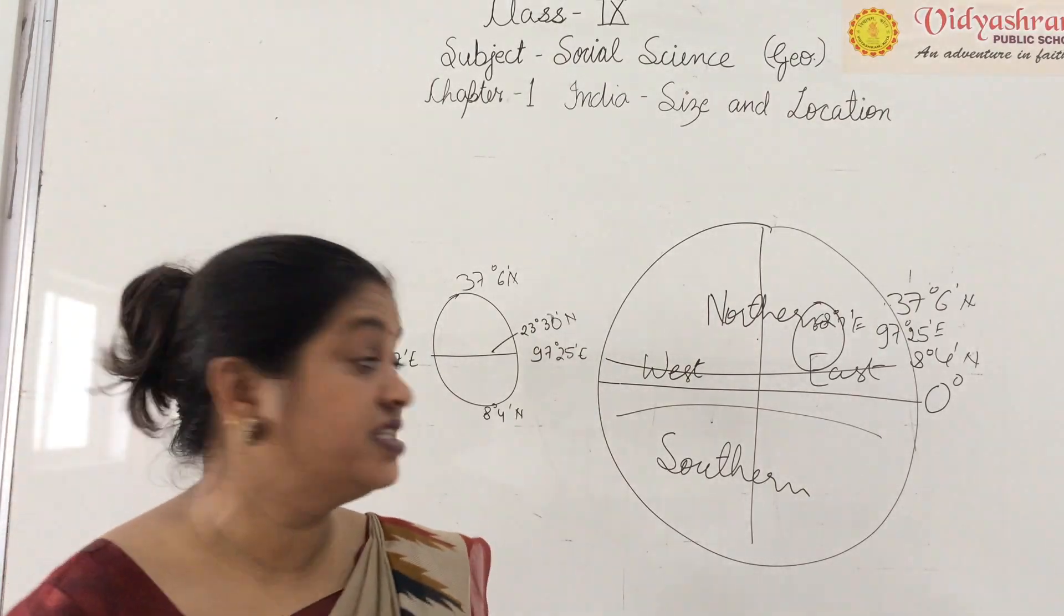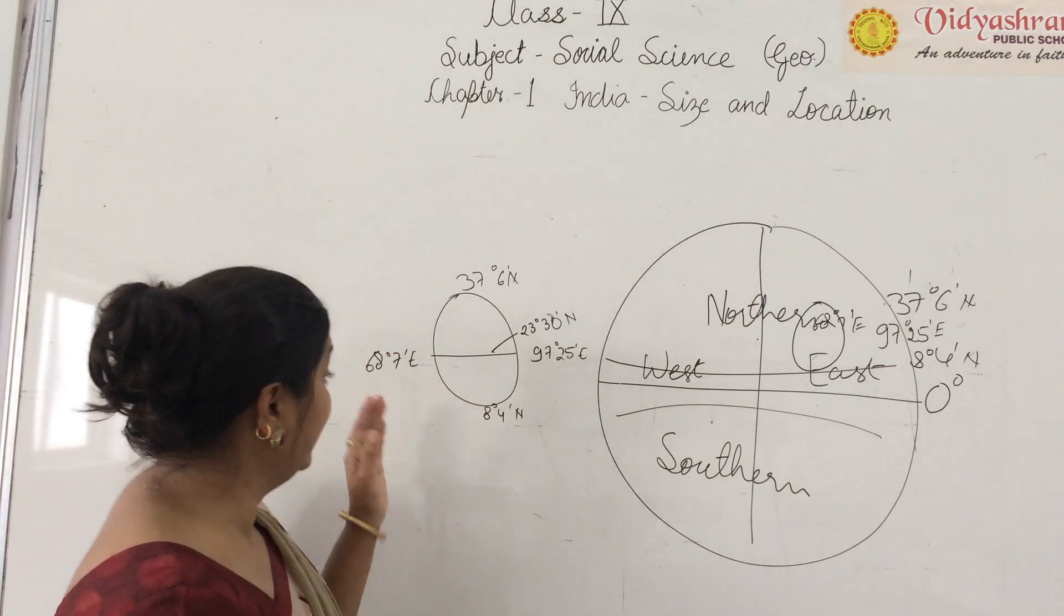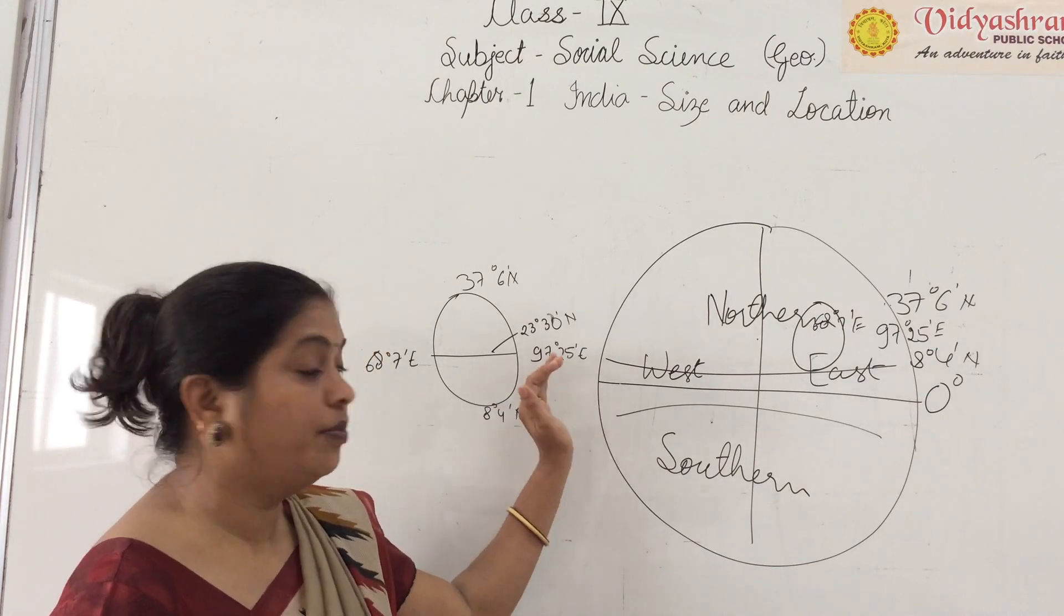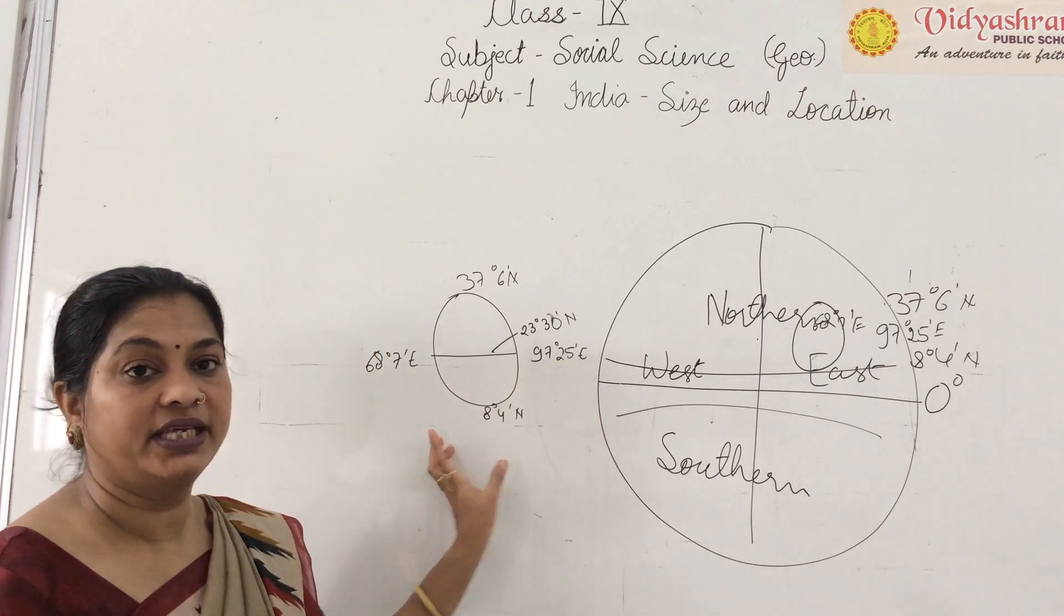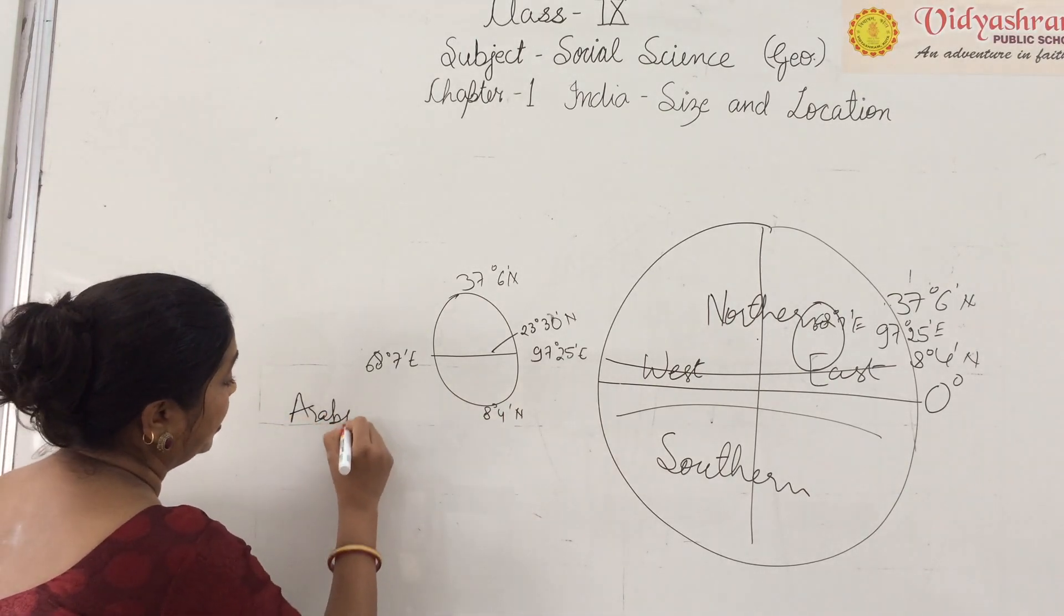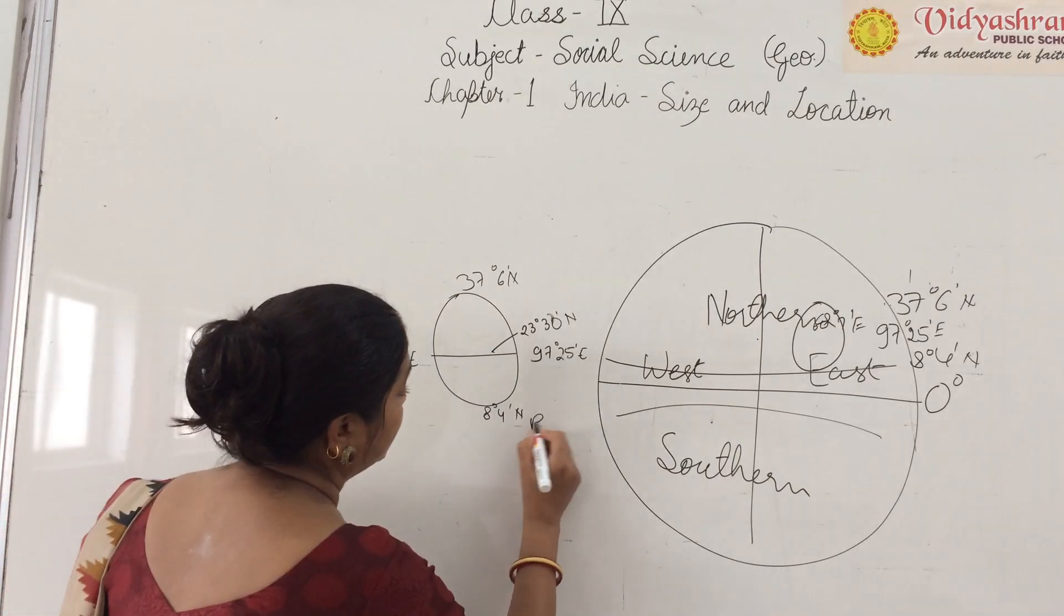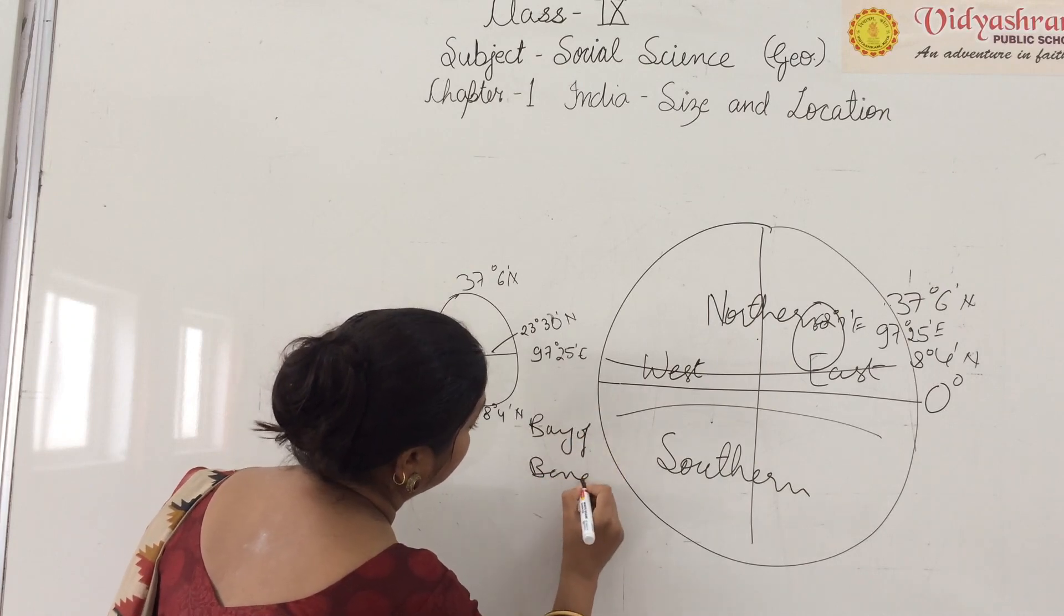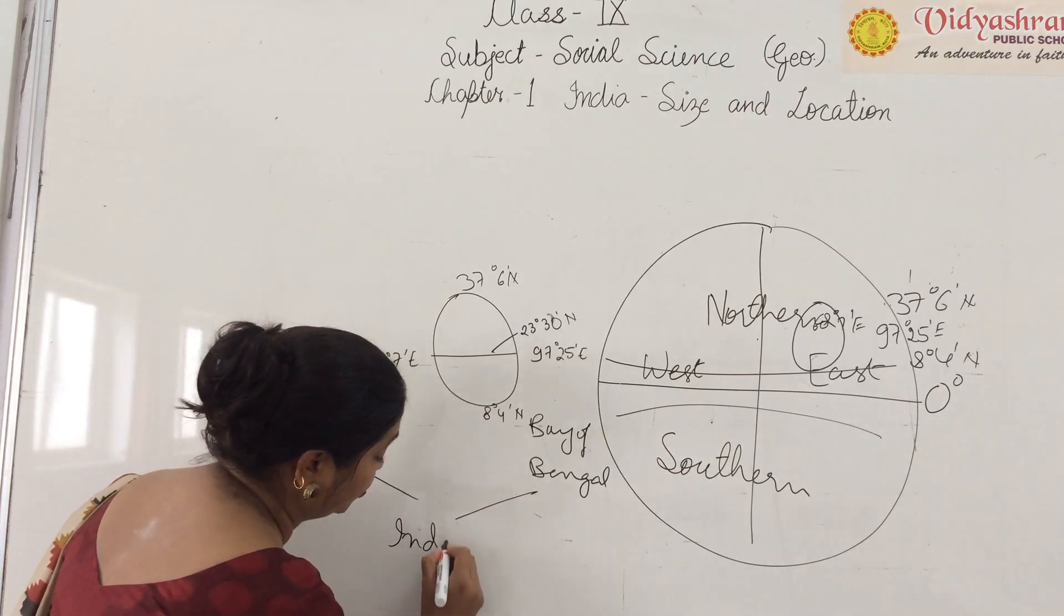Besides, the mainland of India has two important islands and two water bodies. One is Lakshadweep, which is in the Arabian Sea. The other is Andaman and Nicobar Islands, which is in the Bay of Bengal. And the two water bodies are the Arabian Sea, this is the Bay of Bengal, and below is the Indian Ocean.